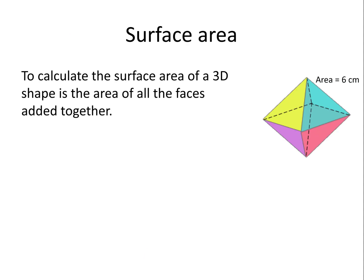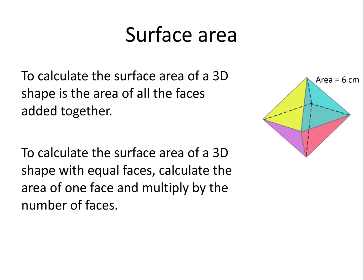Surface area. To calculate the surface area of a 3D shape, we need to work out the area of all the faces added together. To calculate the surface area of a 3D shape with equal sides, calculate the area of one face and multiply it by the number of faces.